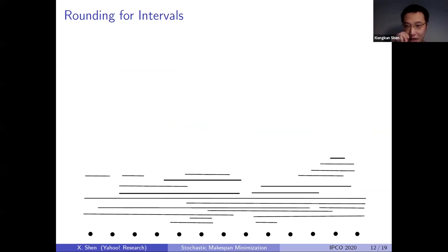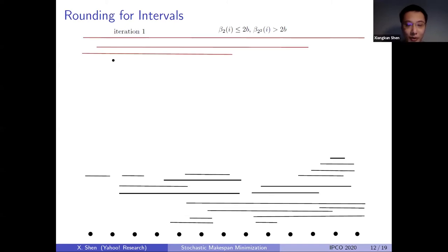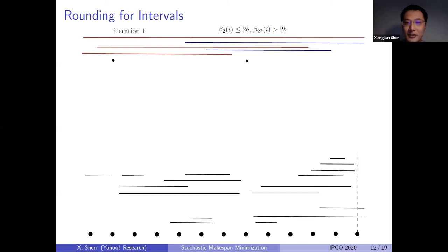Given the fractional solution returned by the LP, we apply a rounding algorithm. I will use an example to illustrate how this rounding algorithm works. It is an iterative approach. In each iteration, we form a subset of intervals and points satisfying a particular property, which are easy to handle separately and then combine. From the LP constraints, we know that every point will have beta_2 effective size at most 2b. In the first iteration, we are interested in those points with beta_b^2 effective size larger than 2b. If a point satisfies this property, we move that point and all intervals with load on those points into the iteration-one list, and repeat for any other point satisfying this condition.